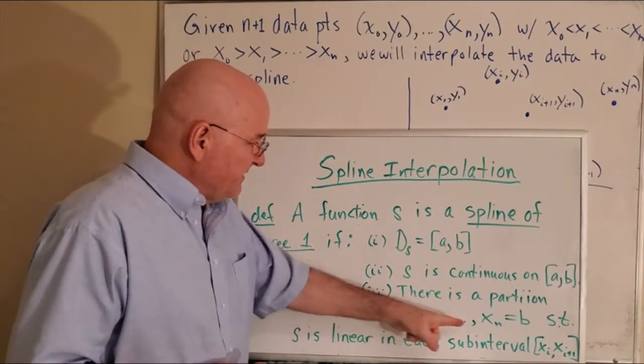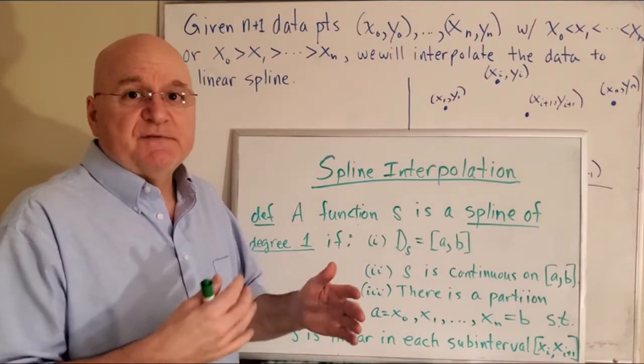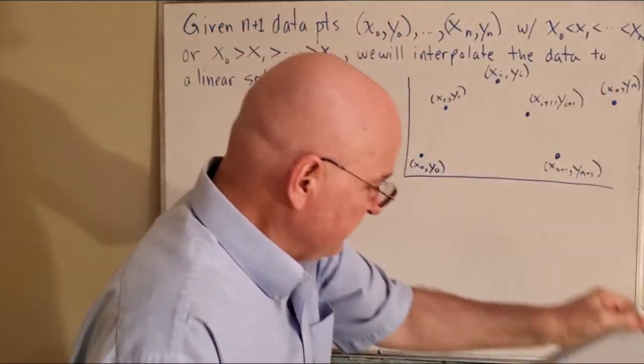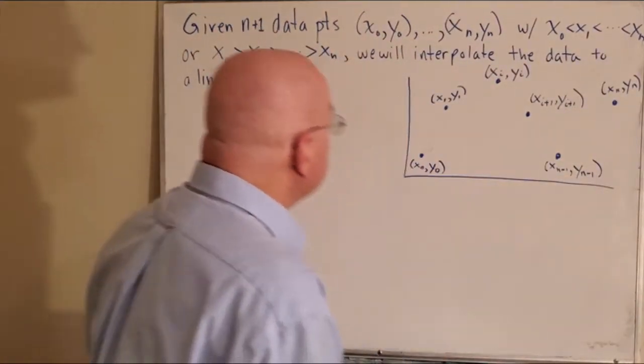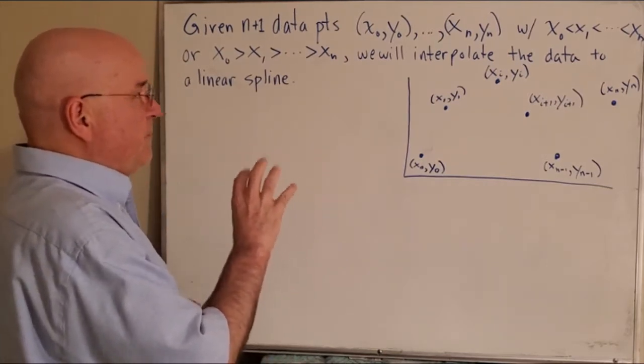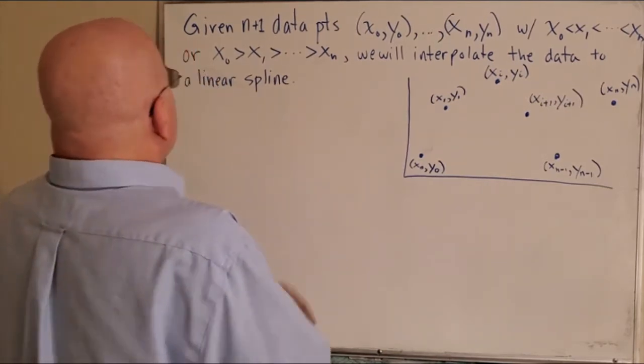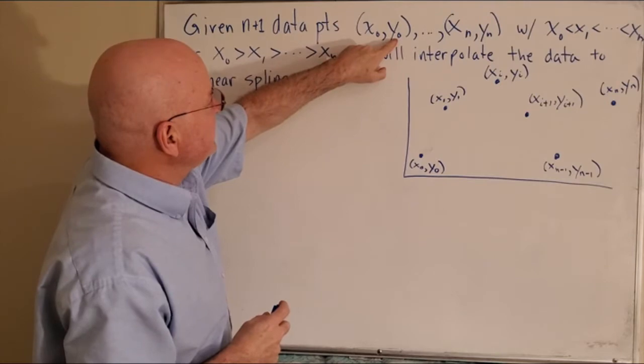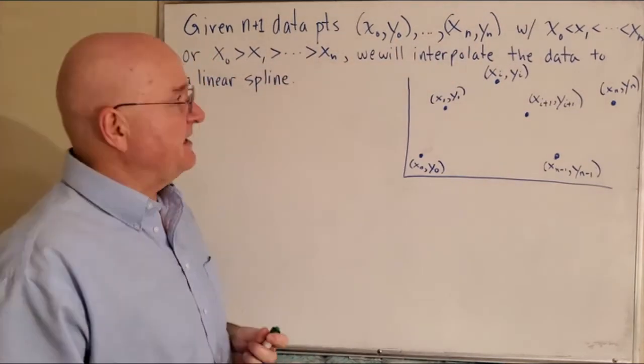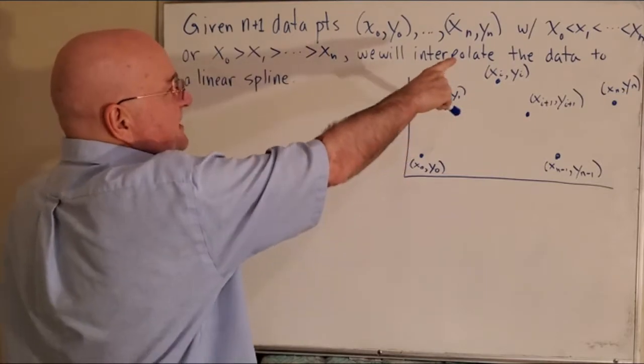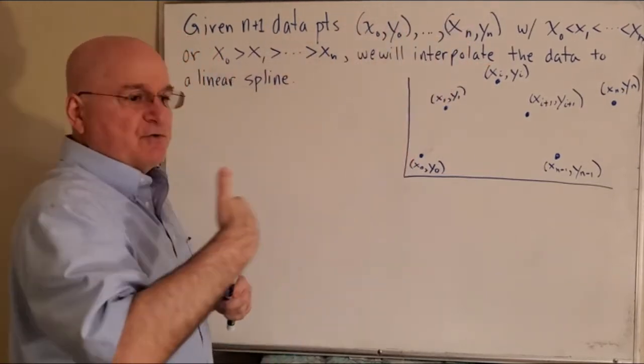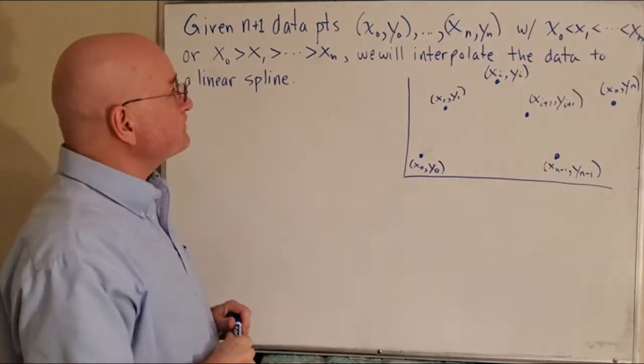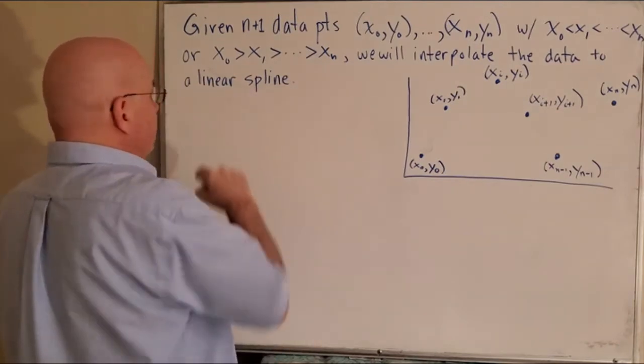And by the way, these points don't need to be equally spaced as we've seen most of the time in the past. Okay, let's continue on with a degree one spline. So you're given n plus 1 data points, because we're going from x0, y0, all the way up to xn, so that's n plus 1 data points. And then all I'm saying there is that the x values are either in increasing order, or they're in decreasing order. And if they're not, just sort them that way.